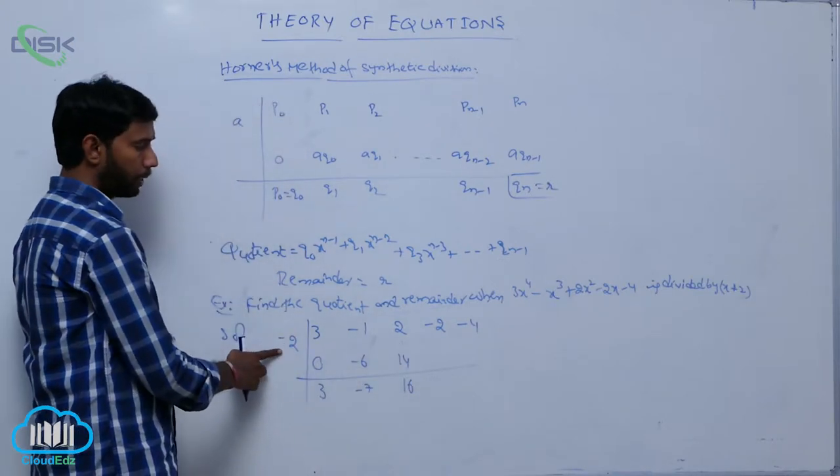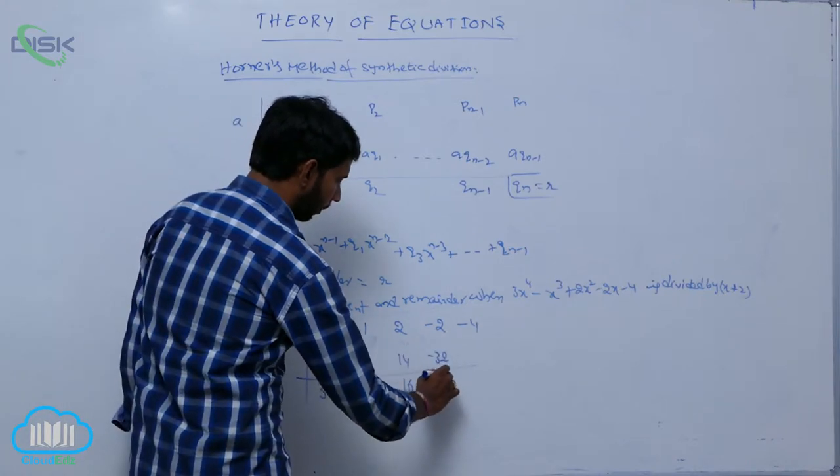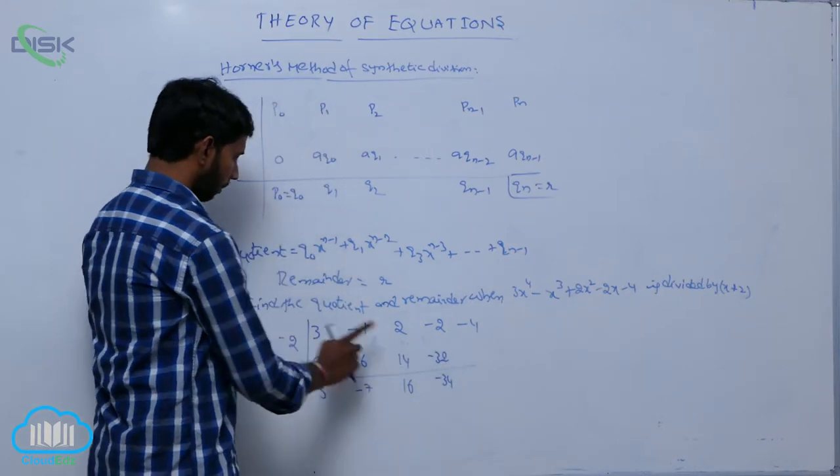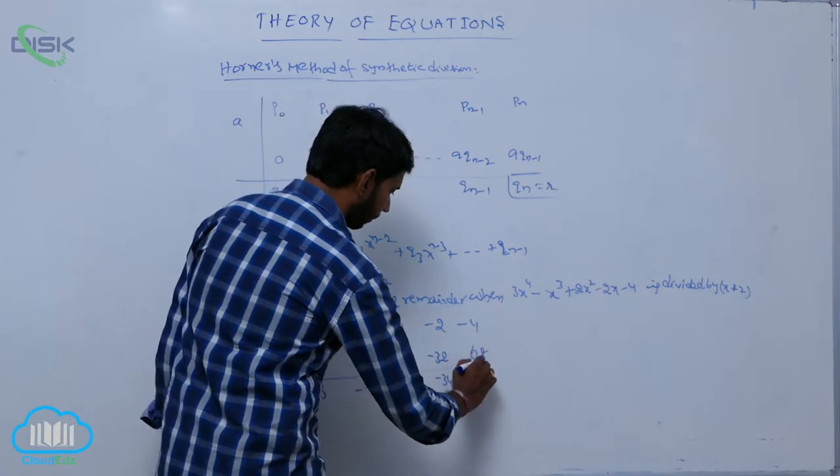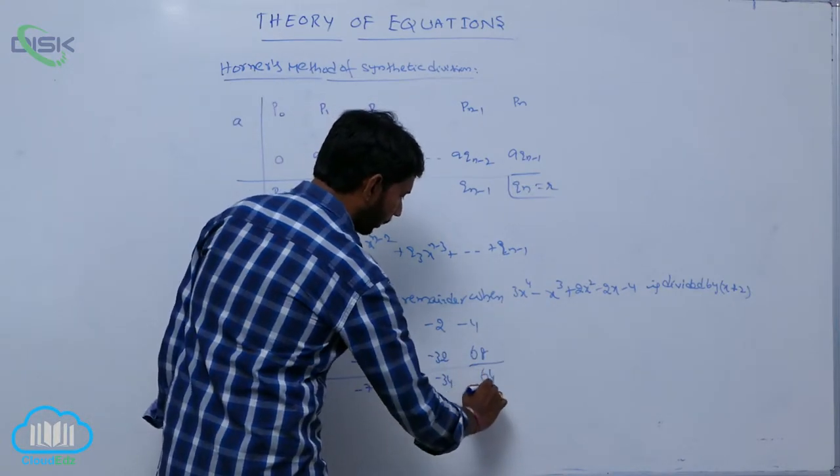16 into -2, -32. It is equal to -34. -34 into -2, it is +68. Then its remainder is equal to 64.